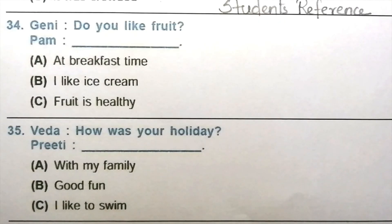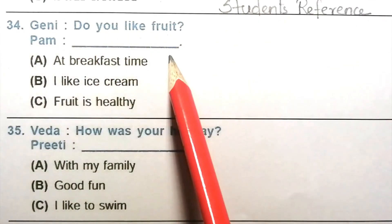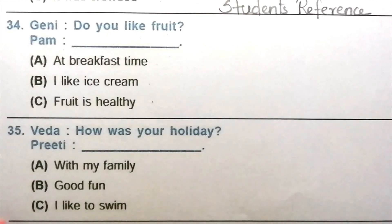Question 34: Jenny: Do you like fruit? Pam: blank. At breakfast time. I like ice cream. Fruit is healthy. The answer is A, at breakfast time. Question 35: Veda: How was your holiday? Priti: blank. With my family. Good fun. I like to swim. The answer is B, good fun.